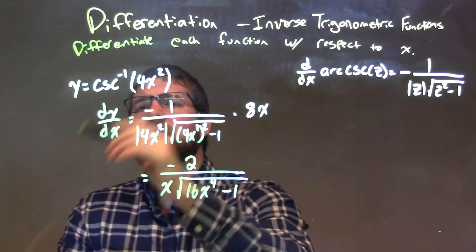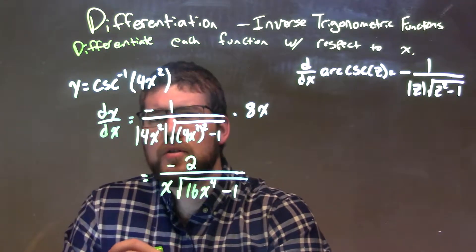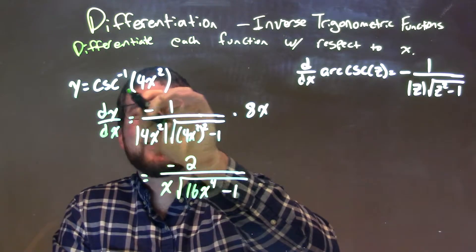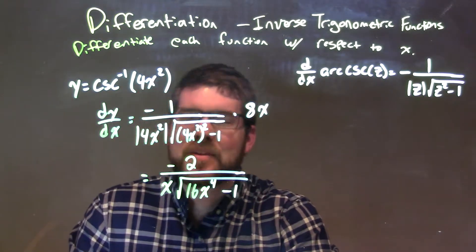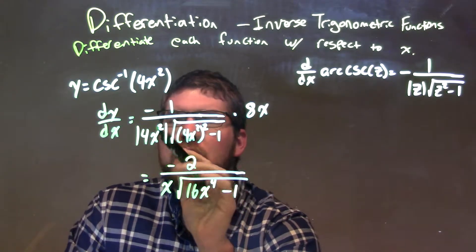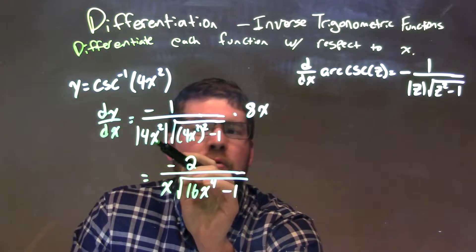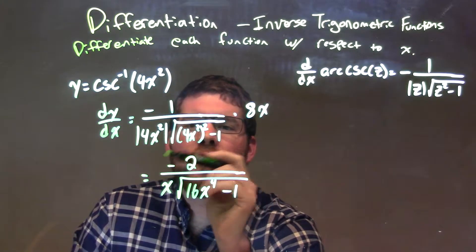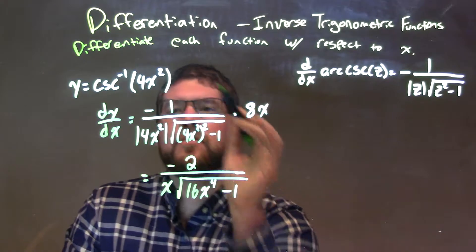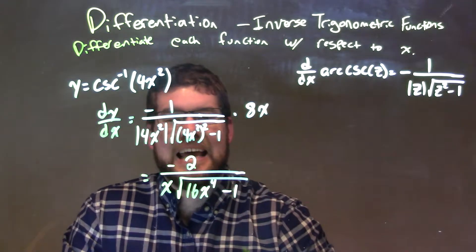So let's recap. We're given y equals the arc cosecant of 4x squared. Well, we took the derivative of that, so by following our rules, we have negative 1 over the absolute value of 4x squared times the square root of 4x squared squared minus 1, and multiply that by the derivative of the inside, using the chain rule, which is 8x.